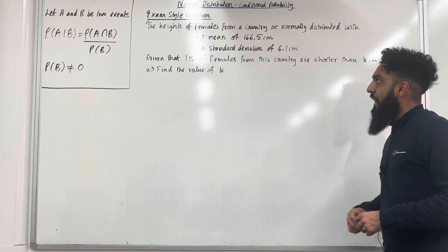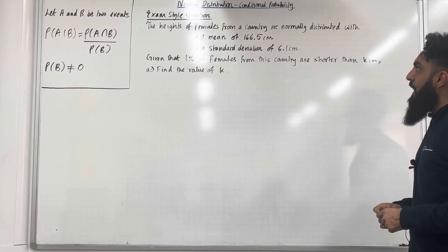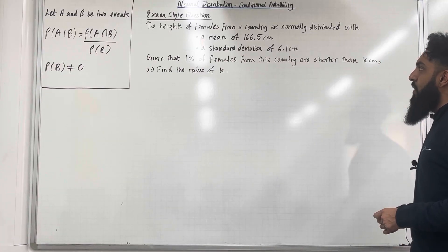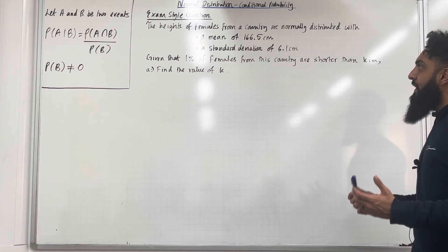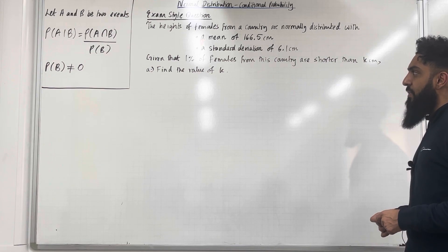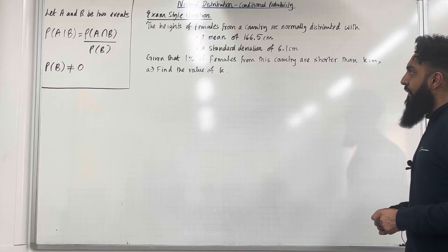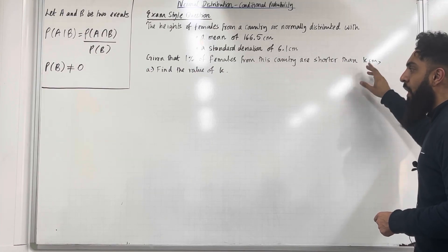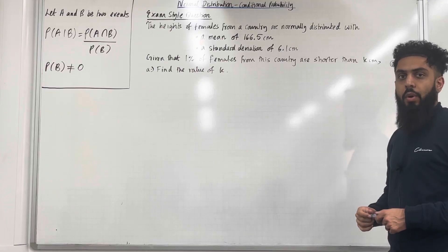Let's have a look at this exam style question. The heights of females from a country are normally distributed with a mean of 166.5 cm and a standard deviation of 6.1 cm. Given that 1% of females from this country are shorter than K cm, Part A: find the value of K.